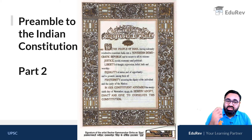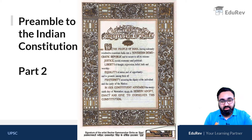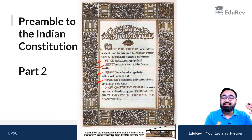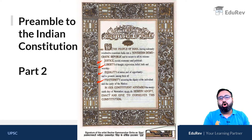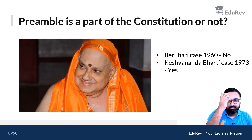But there are other parts of the preamble that we have not discussed yet. For example, if you look at the preamble, it also says justice, liberty, equality, and fraternity. We will get into all of that in today's lecture.